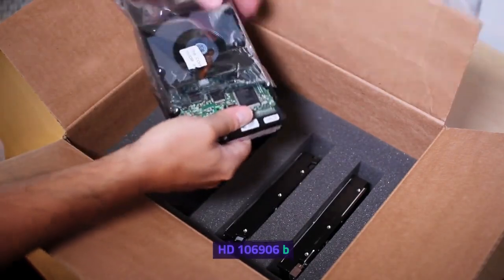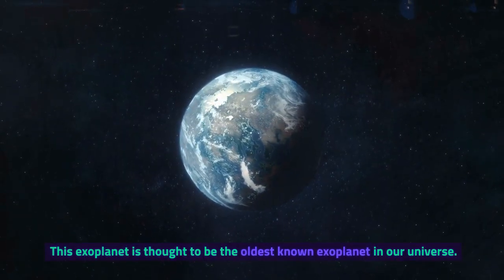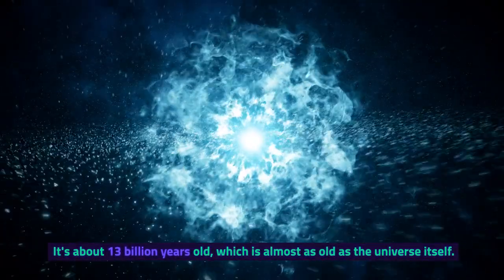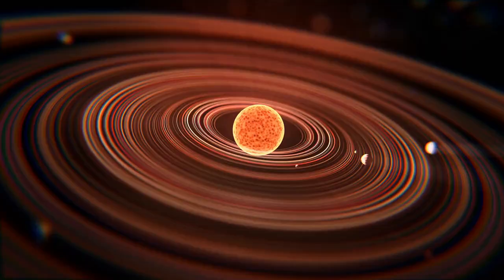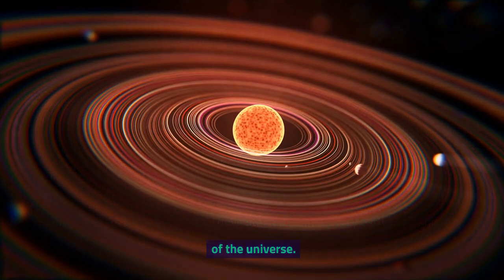HD 106906 B. This exoplanet is thought to be the oldest known exoplanet in our universe. It's about 13 billion years old, which is almost as old as the universe itself. This suggests that planets may have started forming very early in the history of the universe.